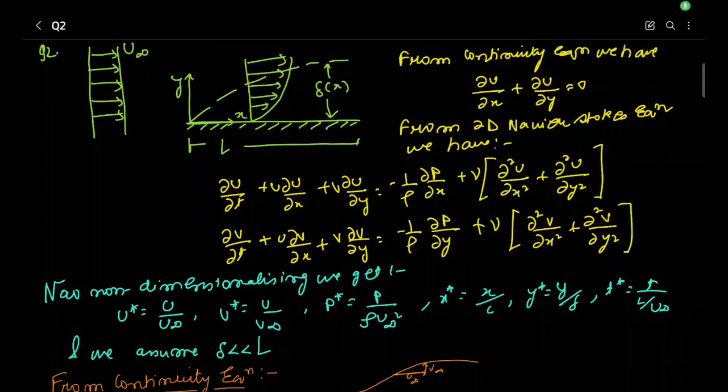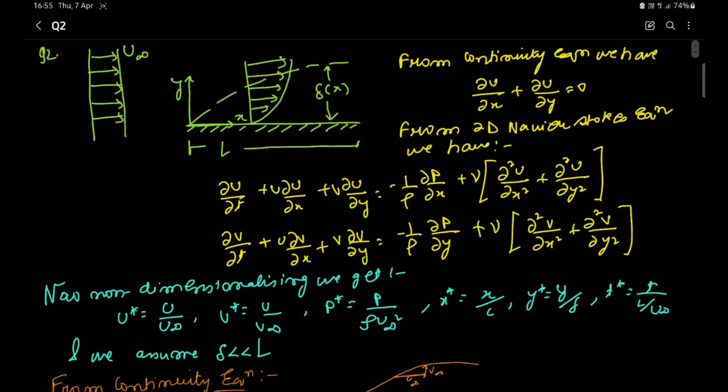We are deriving the boundary layer equations starting from the 2D Navier-Stokes equation for flow over a flat plate. This is our flat plate of length L, with x and y coordinate systems. This is the free stream of air approaching the flat plate with a uniform free stream velocity of u-infinity. This is our gradually growing boundary layer, and this is the boundary layer thickness at a distance x from the initial starting point, delta(x).